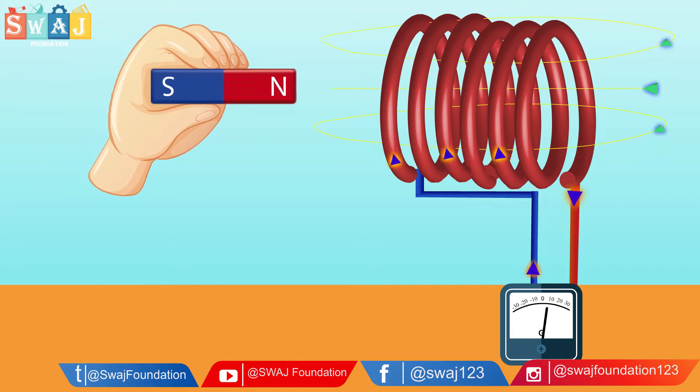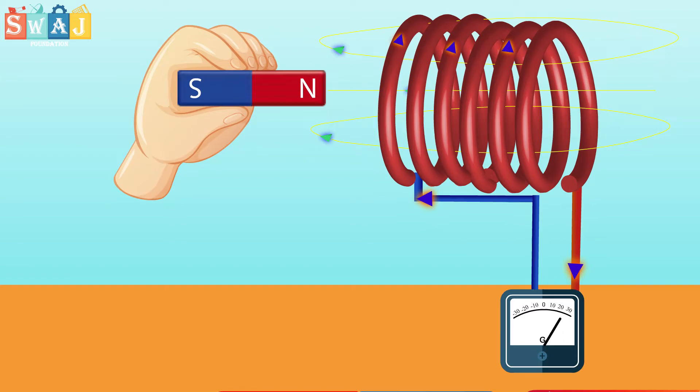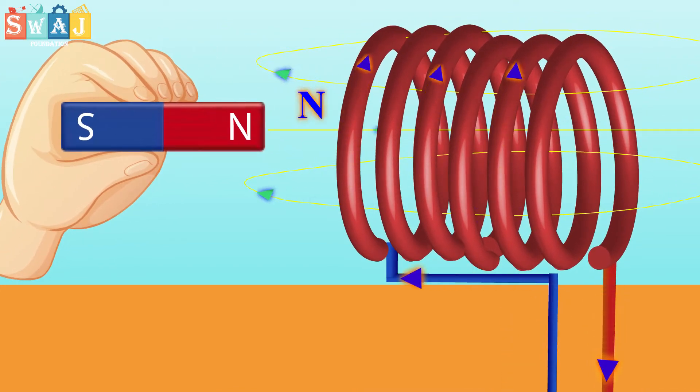We know that a current carrying coil produces a magnetic field similar to that of a bar magnet. One face of the coil acts as the north pole while the other one as the south pole.